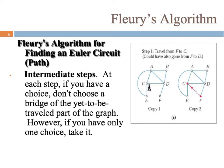Let's see where we should go next. We really could go to either C or D. So the person goes over to part C. And notice the tip here on the left. At each step, if you have a choice, don't choose a bridge of the yet-to-be-traveled part of the graph. So avoid bridges if you can. However, if you have only one choice, take it. And at some point, we are going to get to a step where you could possibly choose a bridge. And I'll show you why that wouldn't work here. So that's the first step. We made it over to C.